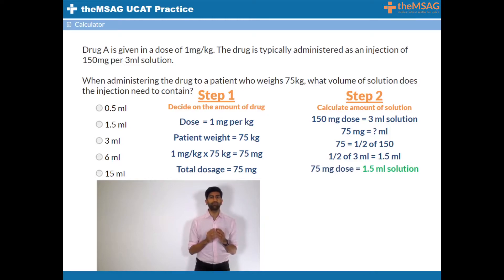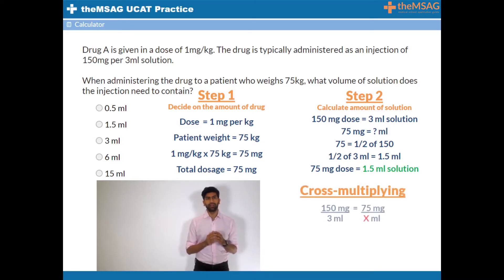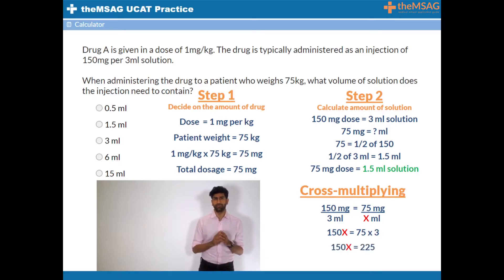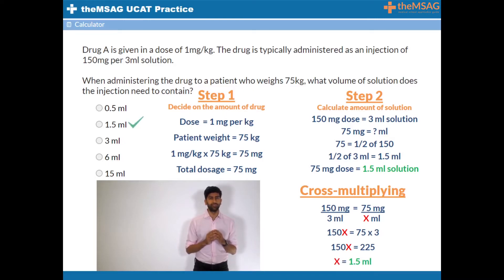If the calculation wasn't to be so easy, the way to solve this step is to cross multiply. 150 milligrams over 3 mils equals 75 milligrams over x mils. 150 times x equals 75 times 3. 150x equals 225. x therefore equals 1.5 mils.